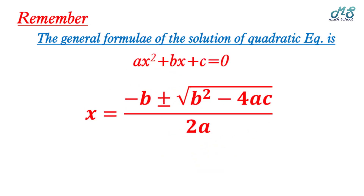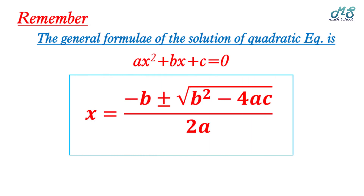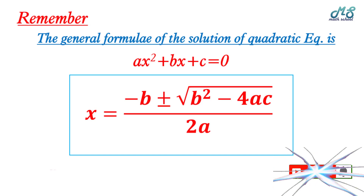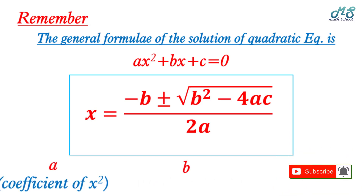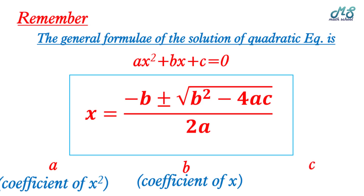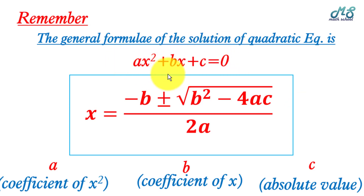Remember, the general formula for the quadratic equation is x equals negative b plus or minus the square root of b squared minus 4ac, all over 2a. Here, a is the coefficient of x squared, b is the coefficient of x, and c is the constant. Before solving, you must write the equation in the form ax squared plus bx plus c equals zero.